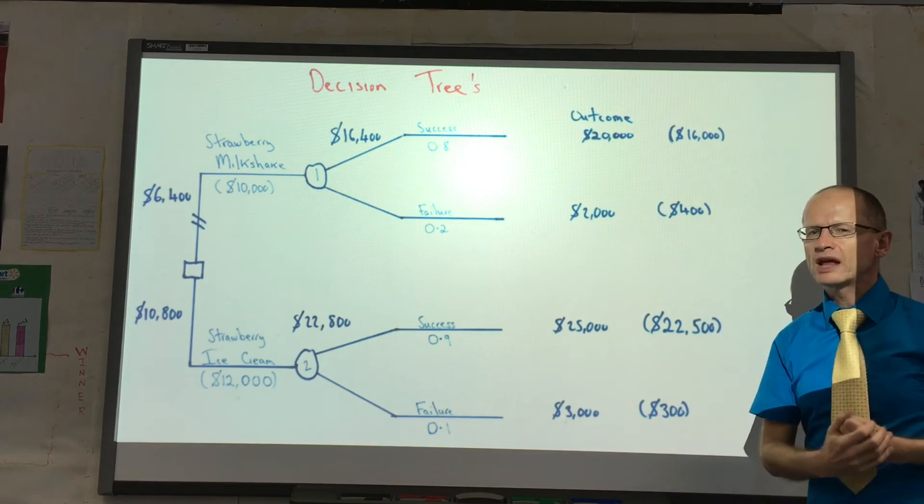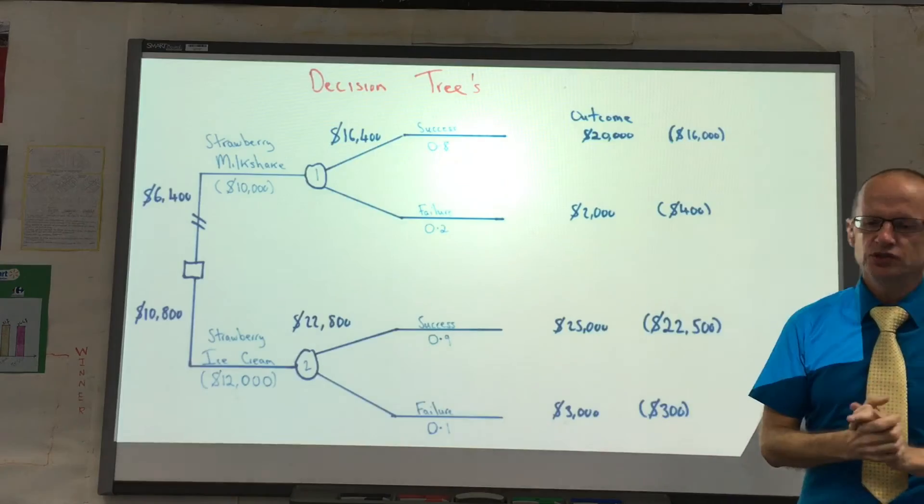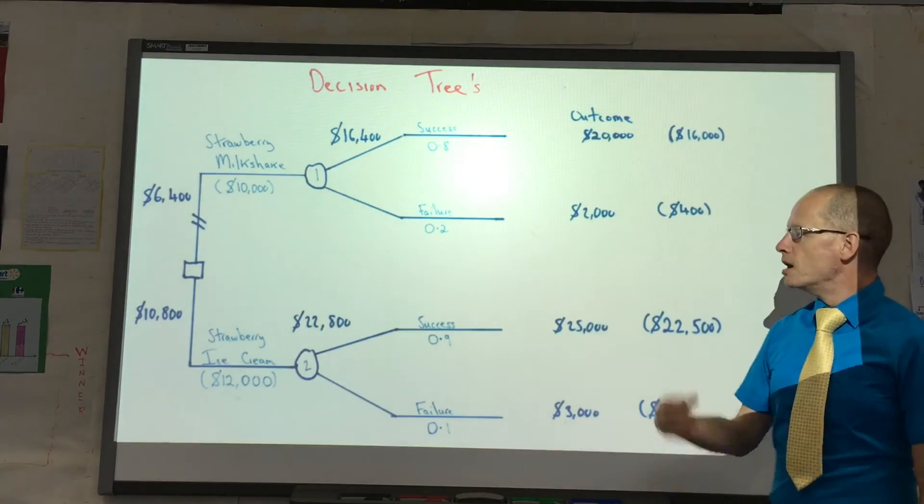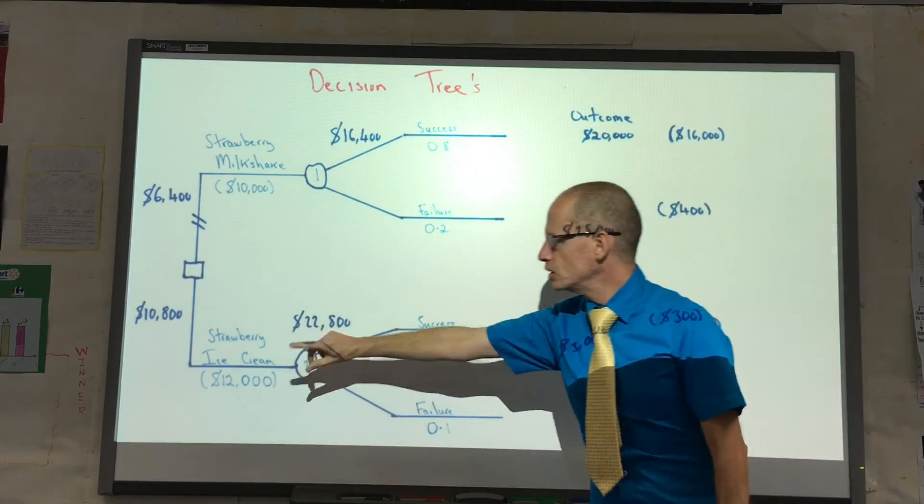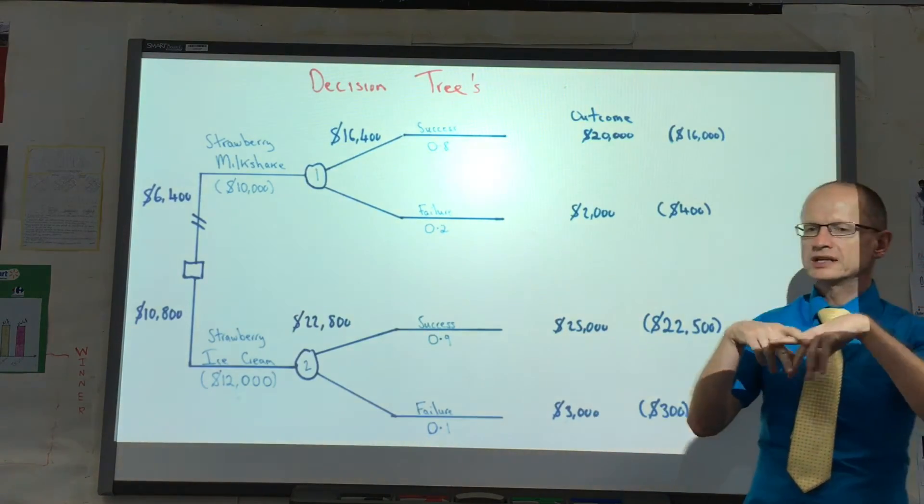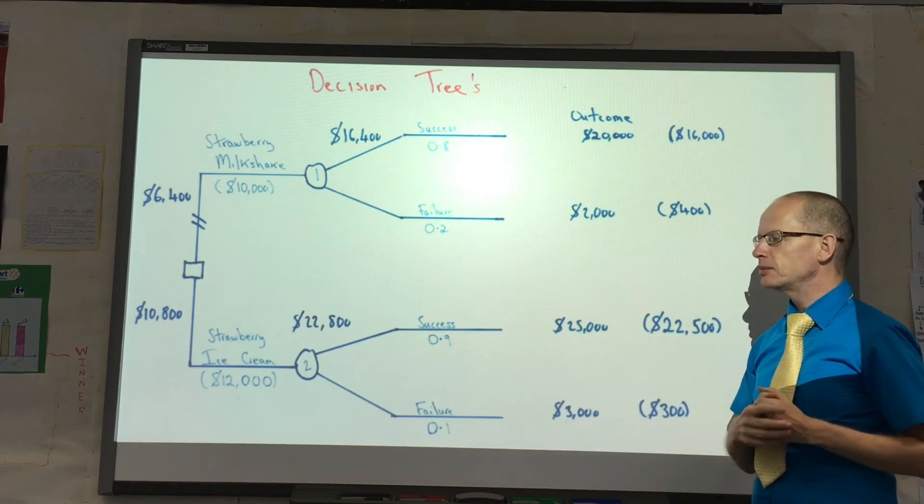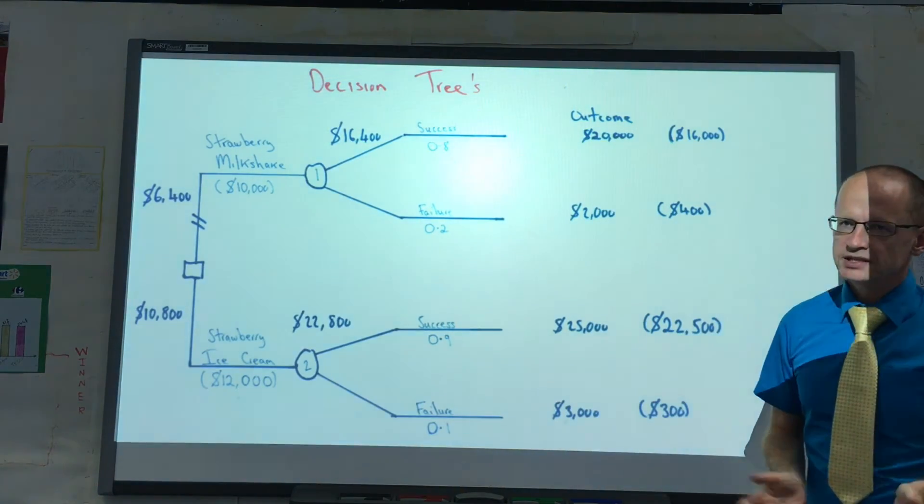So we are very reliant on having high quality information. And maybe that is the difficulty of using the decision tree, because you are looking into the future. Maybe the business has identified strawberry ice cream as being a part of the market which has not been developed. It is a gap in the market. And they launched this product. It is a success initially.